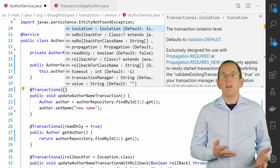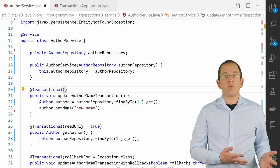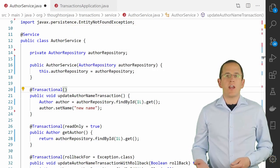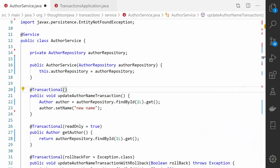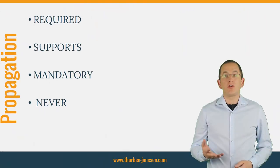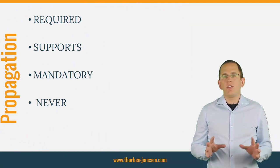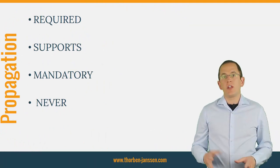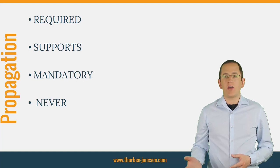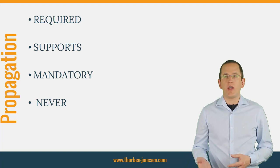Spring's propagation enum defines 7 values that you can provide to the propagation attribute of the @Transactional annotation. They enable you to control the handling of existing and creation of new transactions. You can choose REQUIRED to tell Spring to either join an active transaction or to start a new one if the method gets called without a transaction. This is the default behavior.